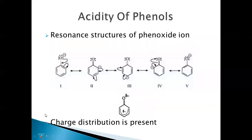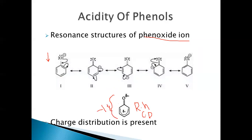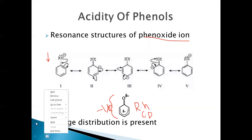When we look at the resonance structures of the phenoxide ion, again there are five resonance structures possible. The electron density is donated into the ring. Looking at the resonance hybrid of the phenoxide ion, there is charge delocalization — the whole molecule is sharing the negative charge. There is no charge separation, and because of this, the phenoxide ion is more stable than phenol.